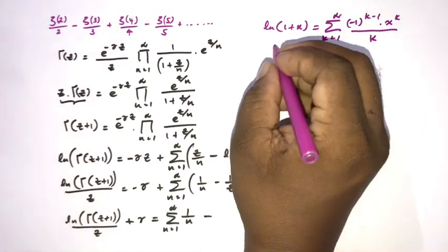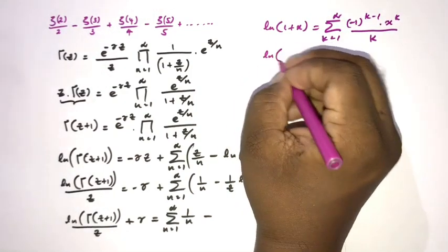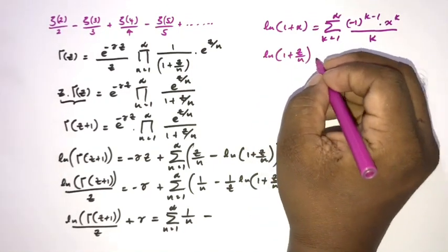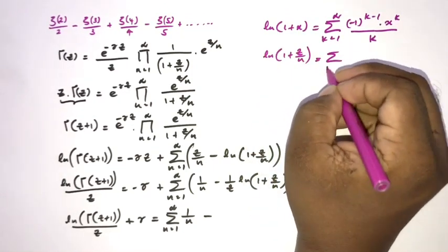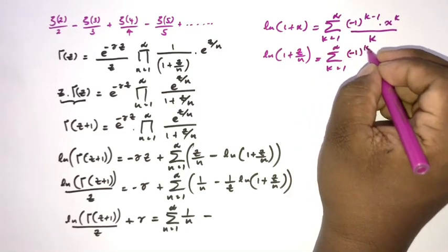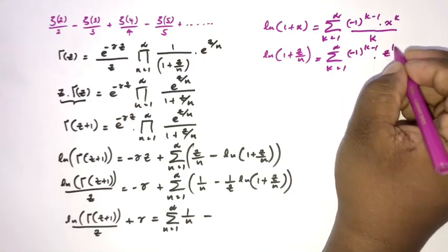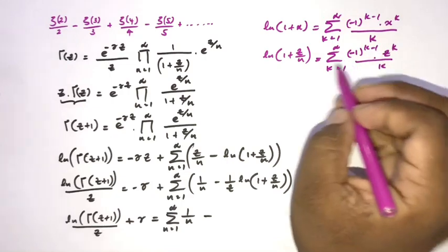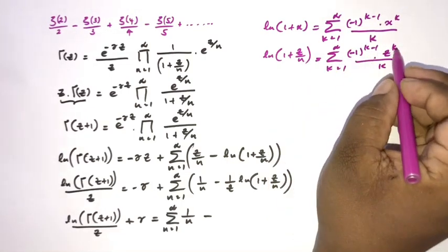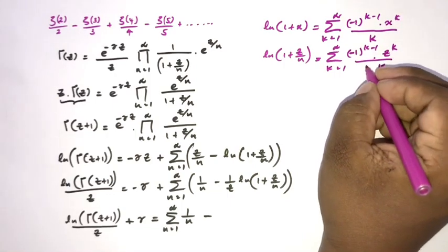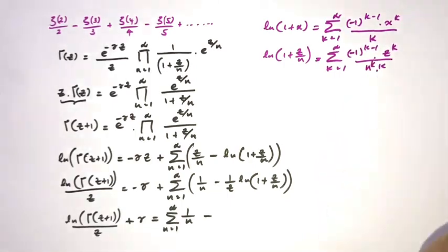Here we plug in x = C/N, so we have the sum from k=1 to infinity of (−1)^(k−1) · C^k / (k · N^k). We have 1/C times this, so C^k/C = C^(k−1), therefore we get the sum from k=1 to infinity of (−1)^(k−1) · C^(k−1) / (k · N^k).